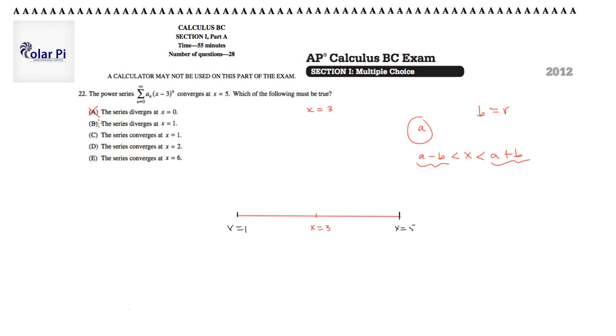Okay, and then in B, the series diverges at x equals 1. We don't know. It might converge. It converged at this endpoint x equals 5, so it might converge at x equals 1. We don't know that it diverges. So we don't know that B must be true.